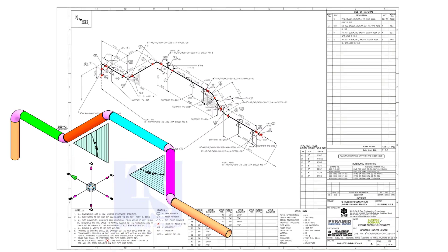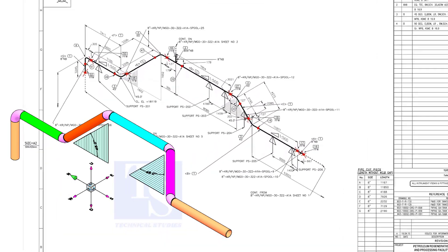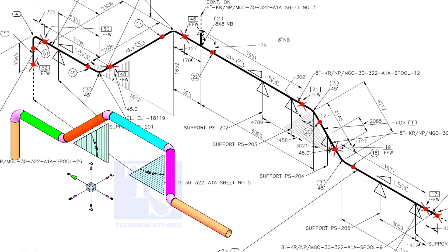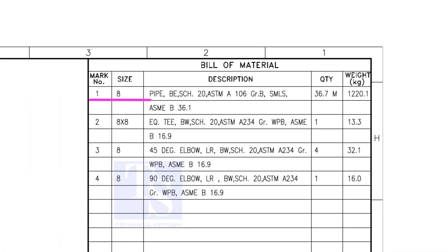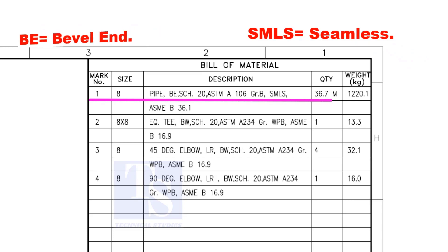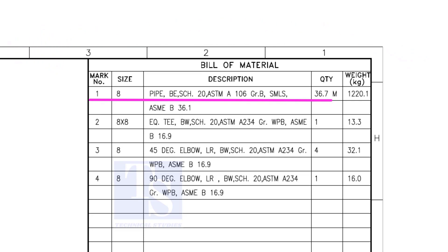Let us have some basic idea of the drawing. Item number 1 is an 8-inch pipe, bevel end, schedule 20. SMLS stands for Seamless. Item number 2 is an equal T, bevel end, schedule 20.